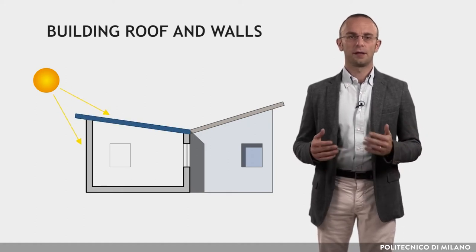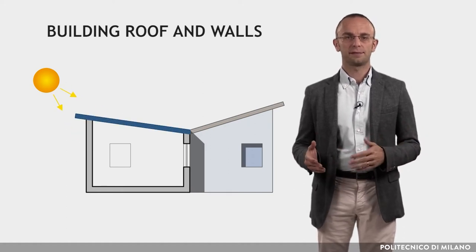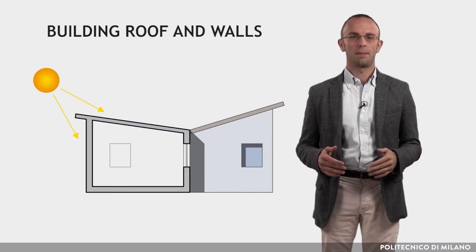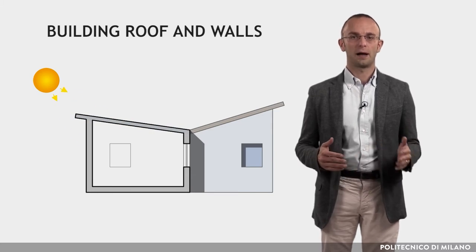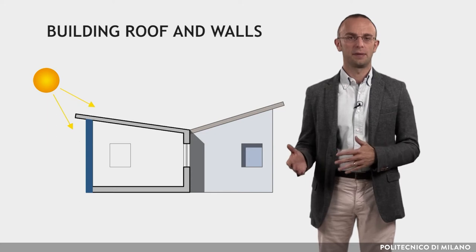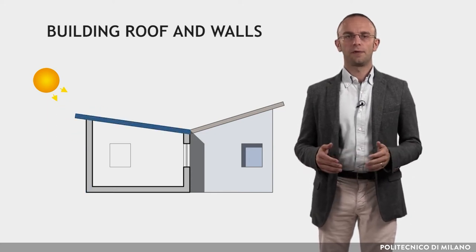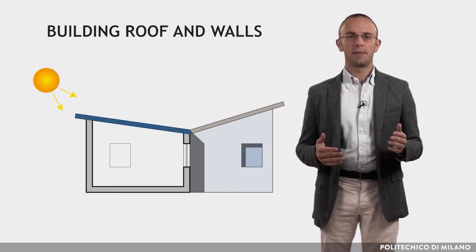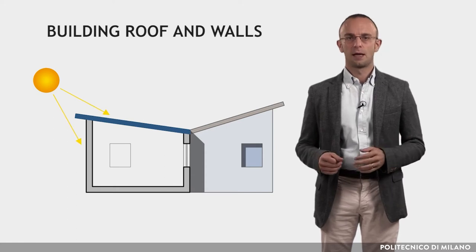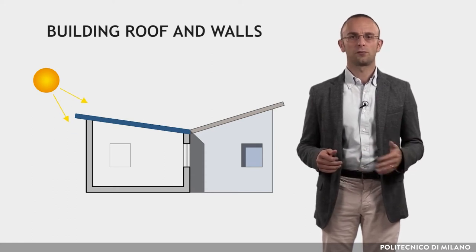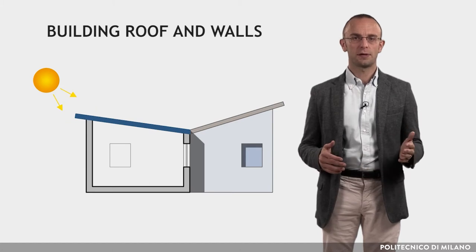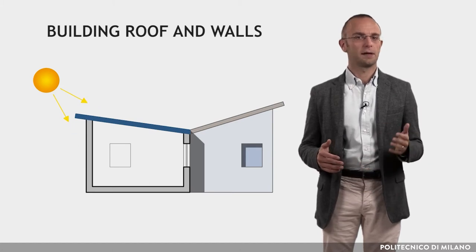Roof design in single-story buildings is especially critical, while the decisions about the walls are equally critical in both low and high-rise buildings. The roof is the part of a building that receives the greatest solar radiation. Thermal performance depends to a great extent on its shape, its construction and the materials used.